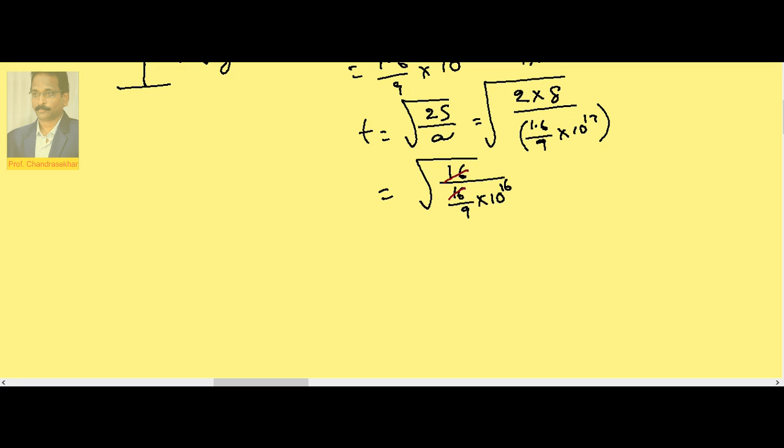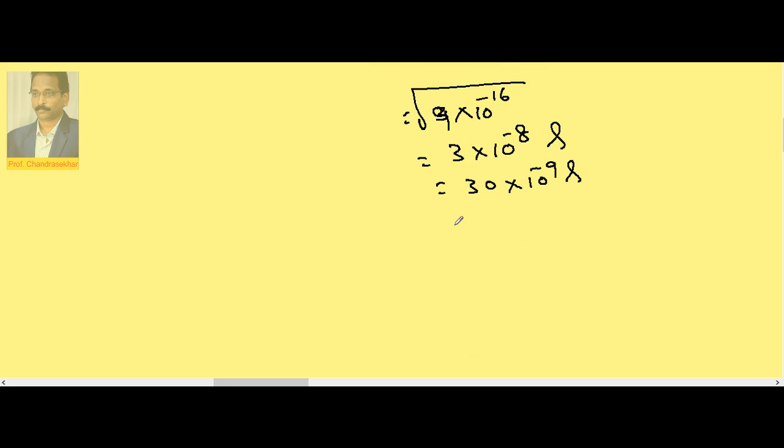This becomes 3 into 10 to the power of minus 8 seconds, or 30 into 10 to the power of minus 9 seconds. So I can write as 30 nanoseconds.